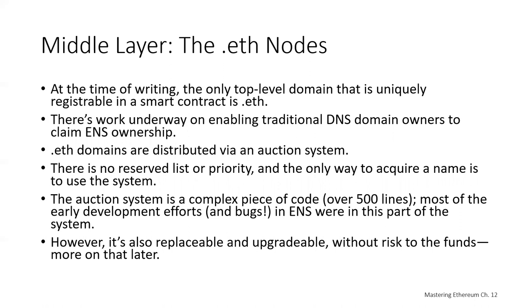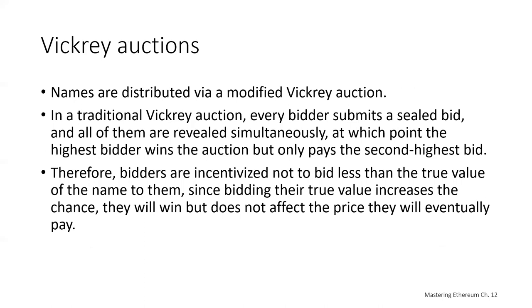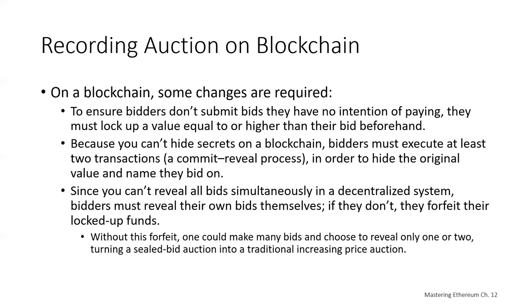ETH domains are distributed via a type of auction referred to as a Vickrey auction. In a traditional Vickrey auction, every bidder submits a sealed bid, all are revealed simultaneously, the highest bidder wins but only pays the second highest bid. Bidders are therefore incentivized to bid their true value. On a blockchain, some changes are necessary: to ensure bidders don't submit bids they have no intention of paying, the bidder must lock up a value equal to or higher than their bid beforehand. Because you can't hide secrets on a blockchain, bidders must execute at least two transactions — a commit-reveal process — in order to hide the original value and name they're bidding on.